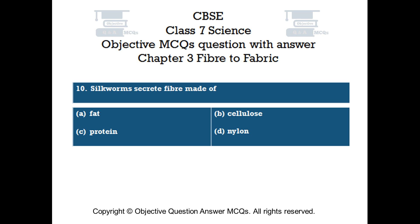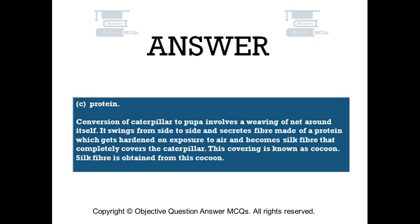The right answer is Option C — Protein. Conversion of caterpillar to pupa involves a weaving of net around itself. It swings from side to side and secretes fiber made of a protein, which gets hardened on exposure to air and becomes silk fiber that completely covers the caterpillar. This covering is known as cocoon. Silk fiber is obtained from this cocoon.